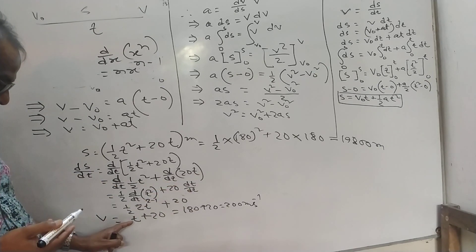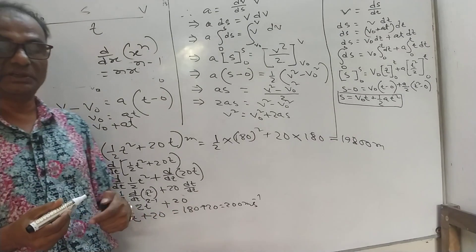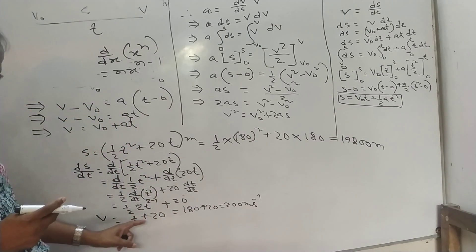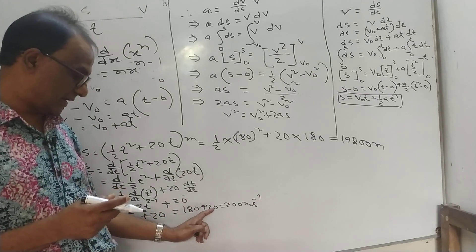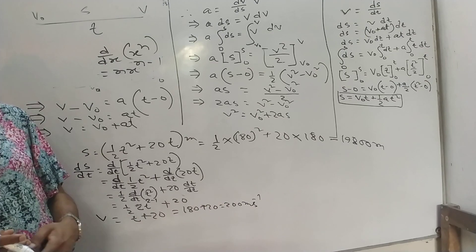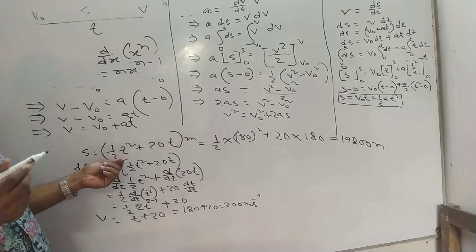We have t plus 20. The three minutes which has been given, so three minutes equals 180 seconds. And 20, so 20 meters per second is the value.